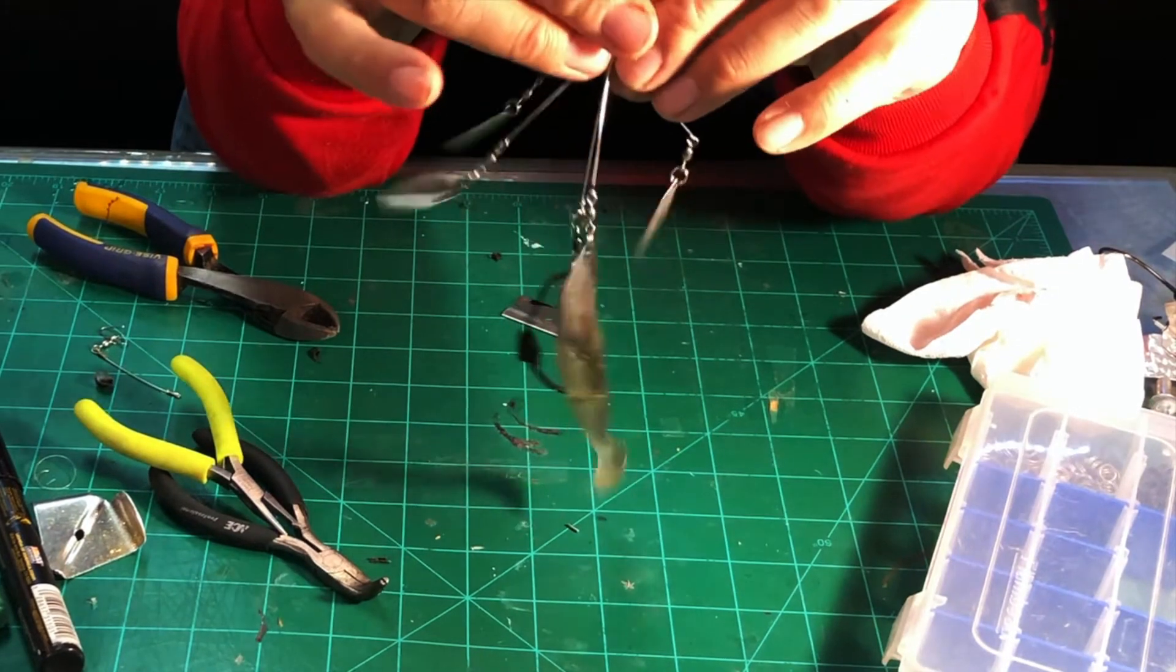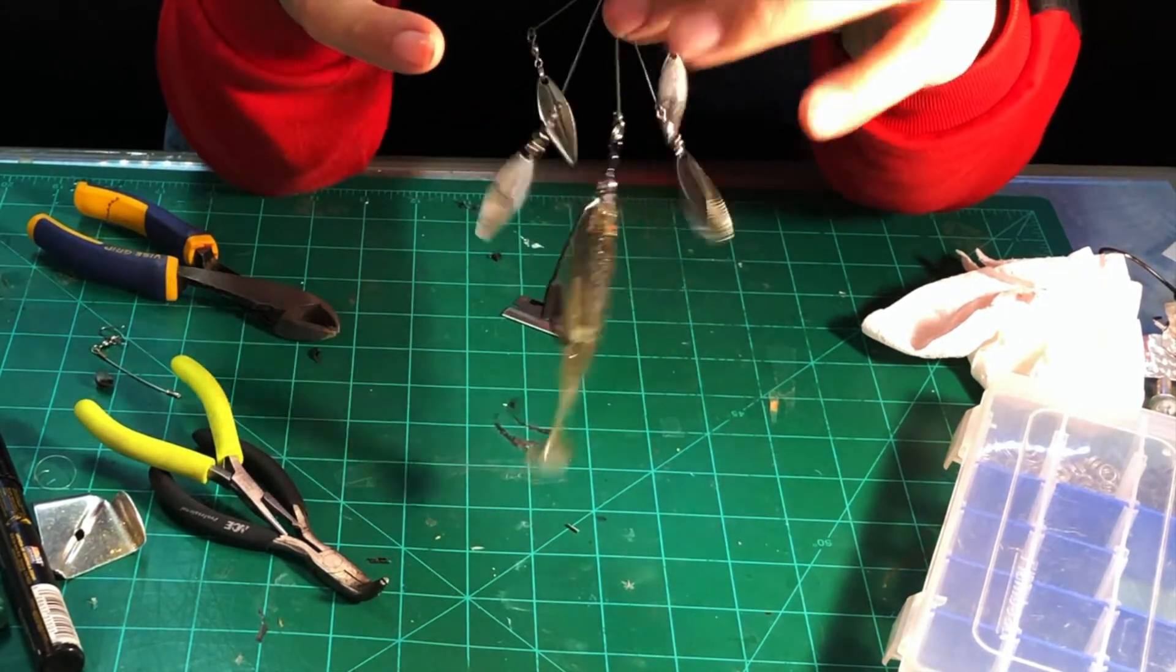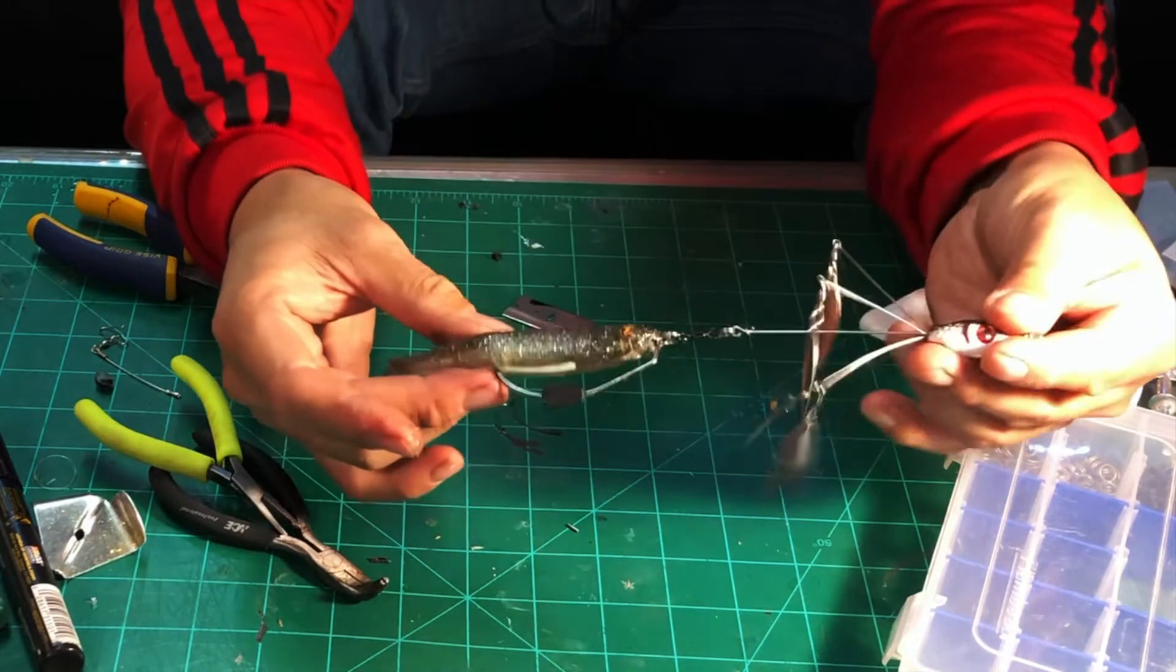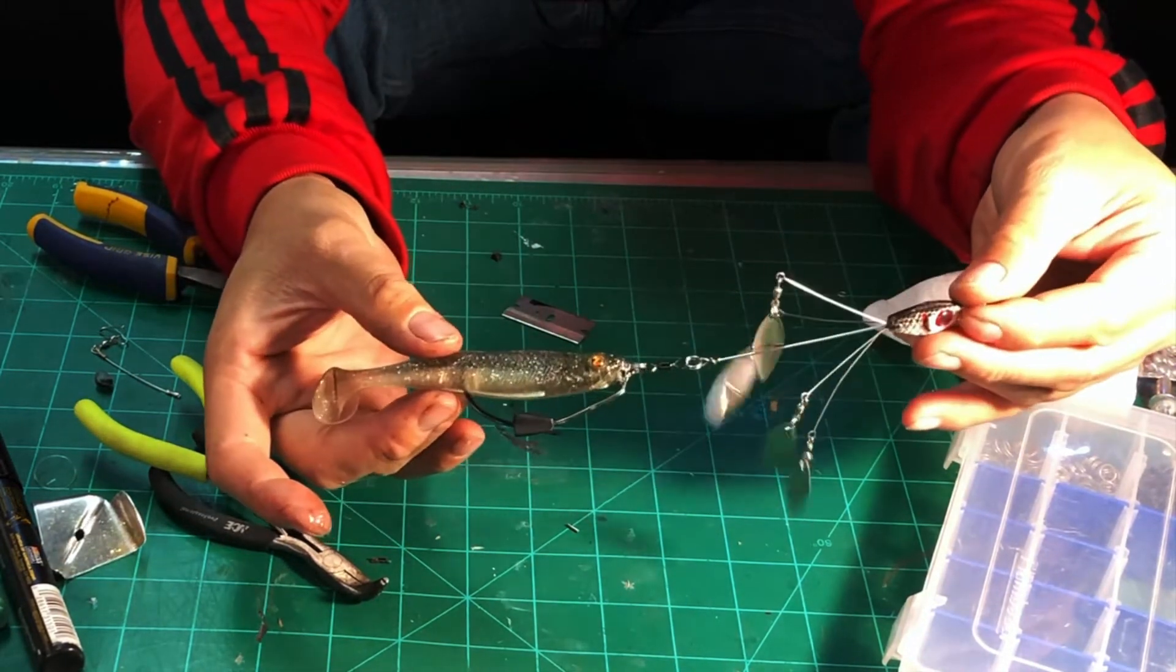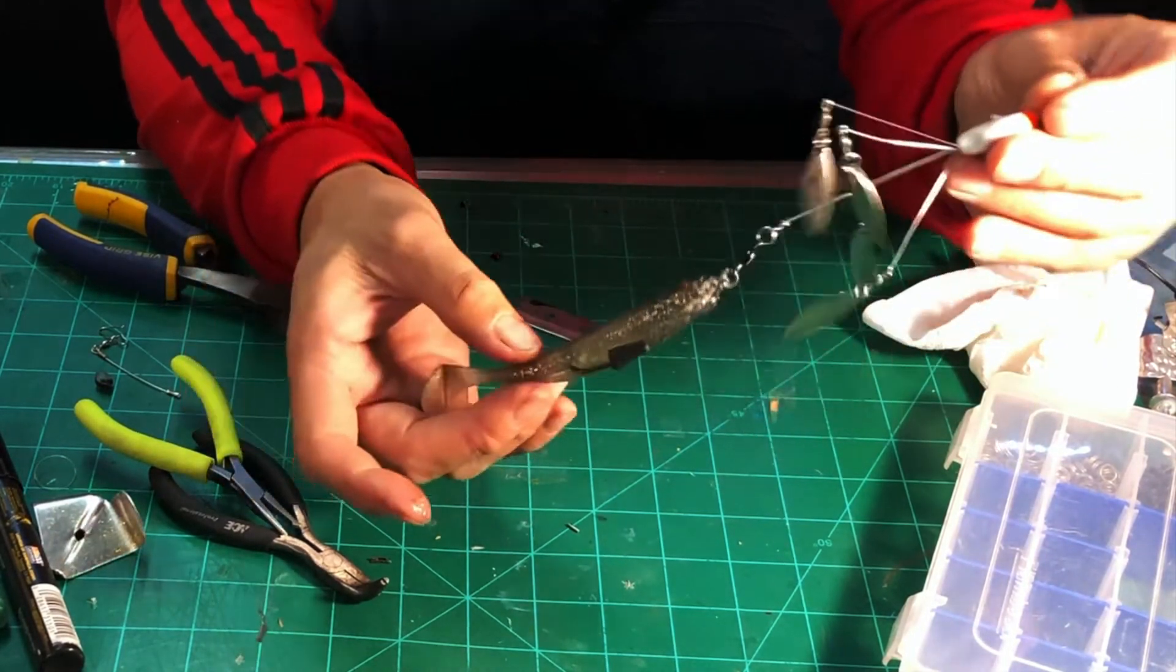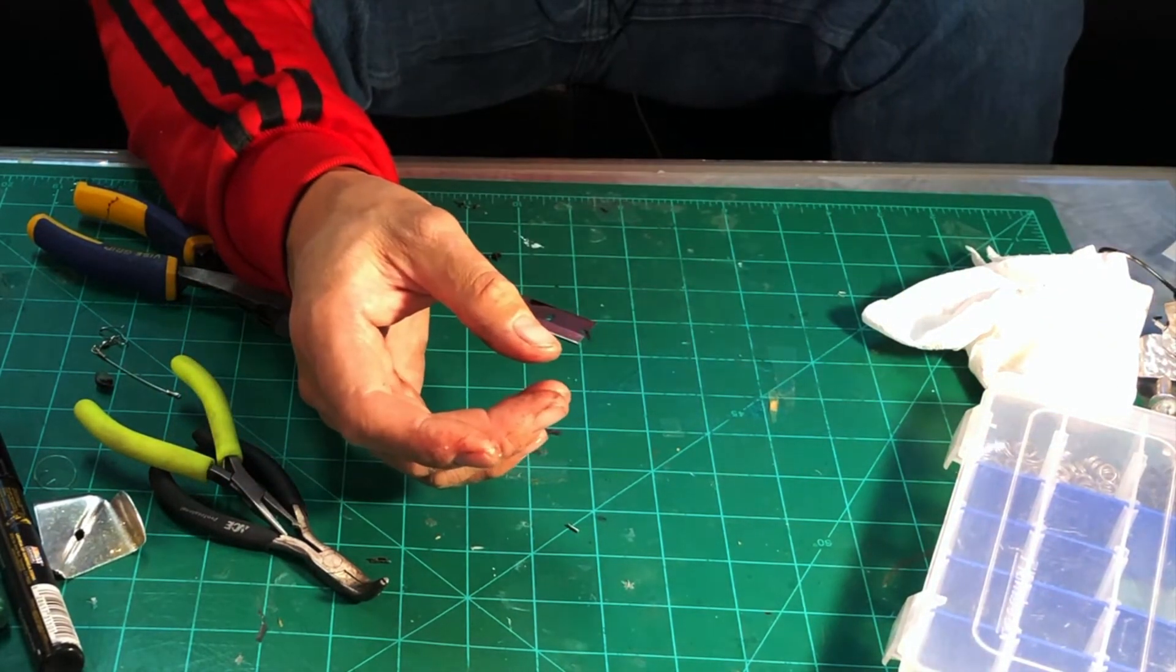But yeah, so then you can just adjust these blades however you want. And there you go—the Alpine Rig modified and then made weedless. This is—I'm excited to fish this again.